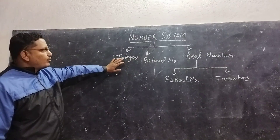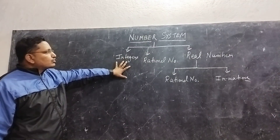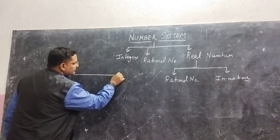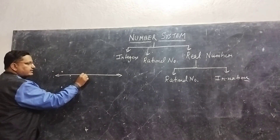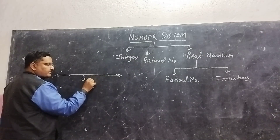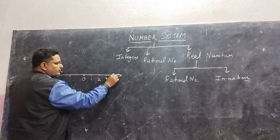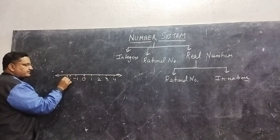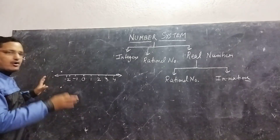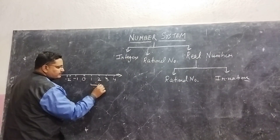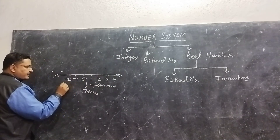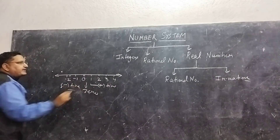Before starting the chapter, I would like to explain the basics. What are integers? We can understand integers through a number line. On the right side we have all positive numbers — 1, 2, 3, 4 — and on the left side we have all the negative numbers. This represents the integers.